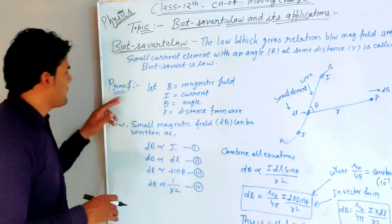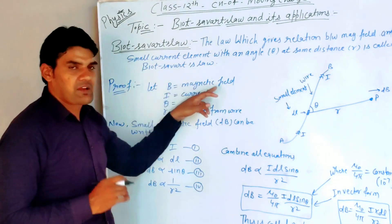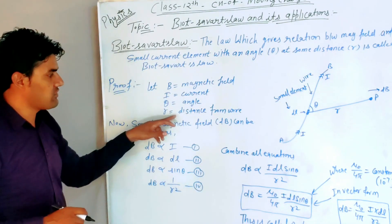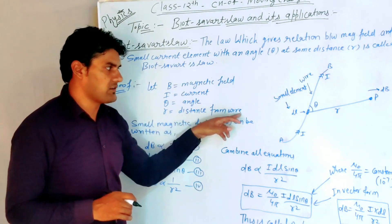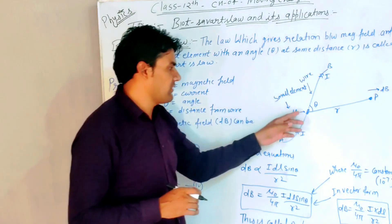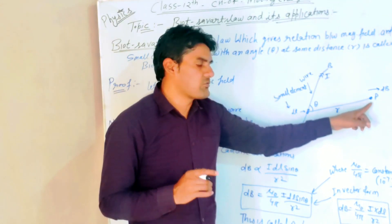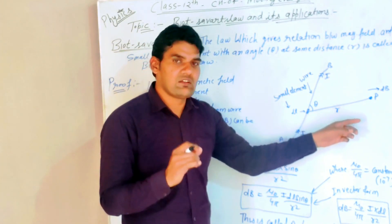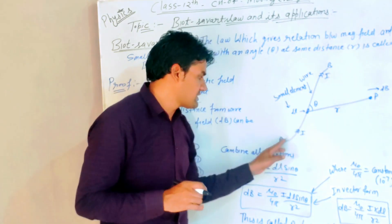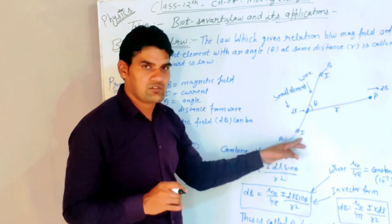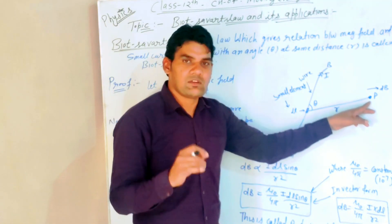Let B be the magnetic field, I the current, theta the angle, and R the distance from the wire. You can see in the diagram this is the distance R at point P. We have to find the magnetic field at point P. This is the wire AB in which current I is flowing.